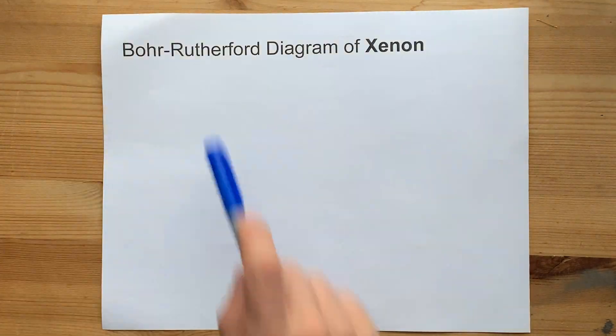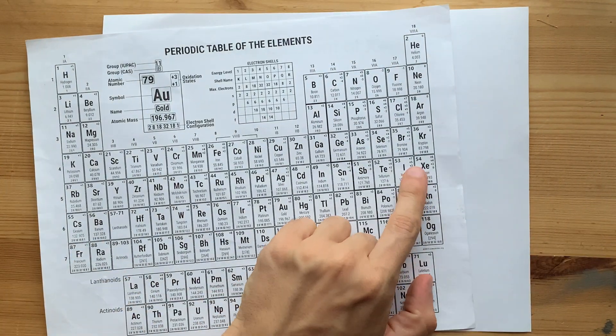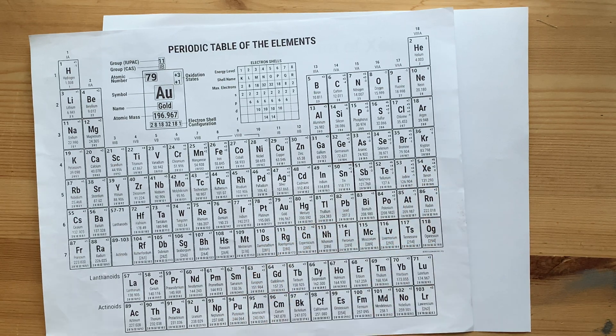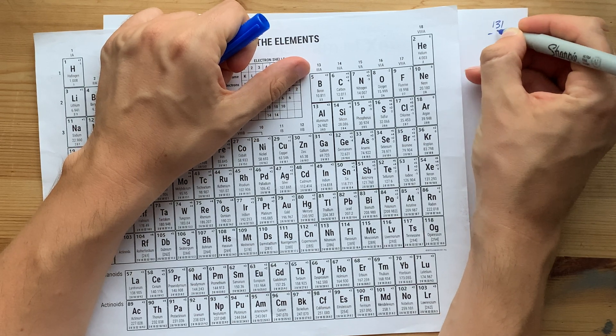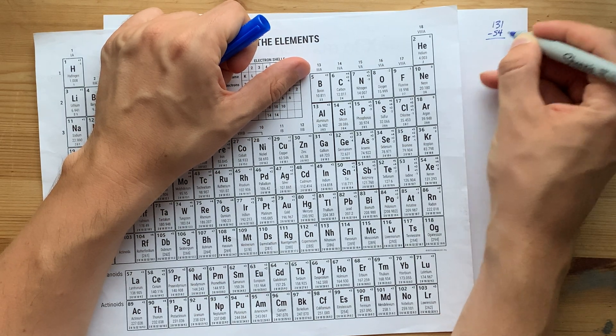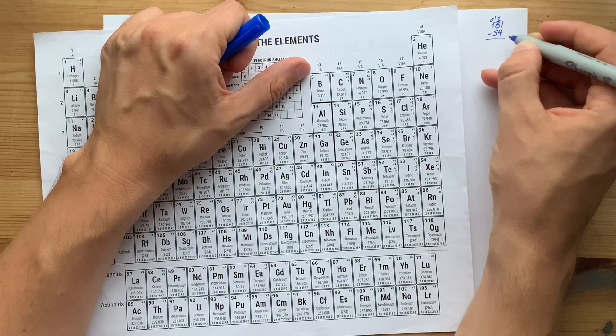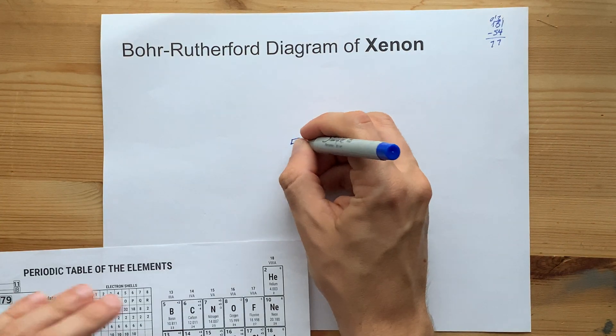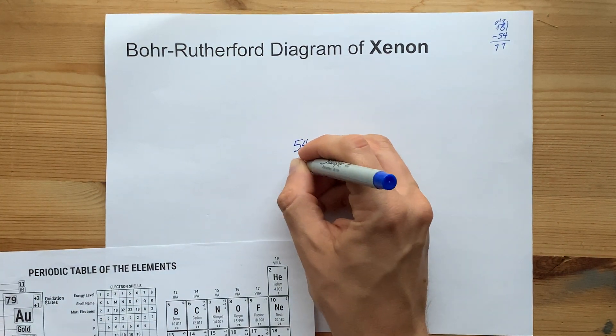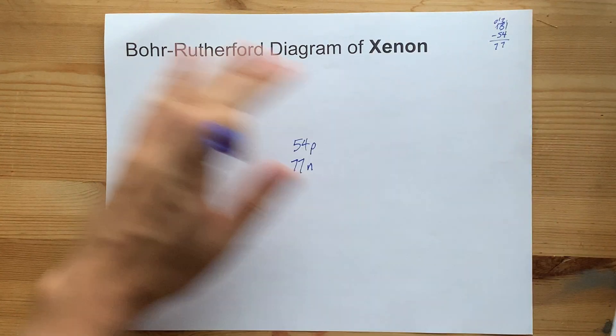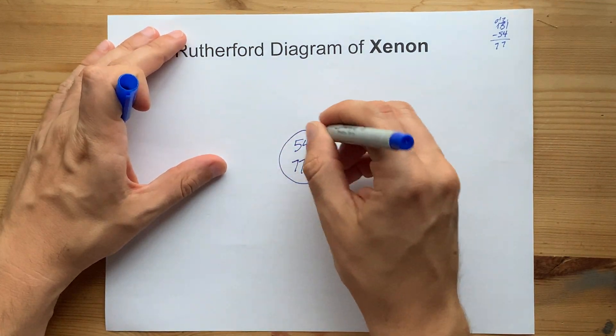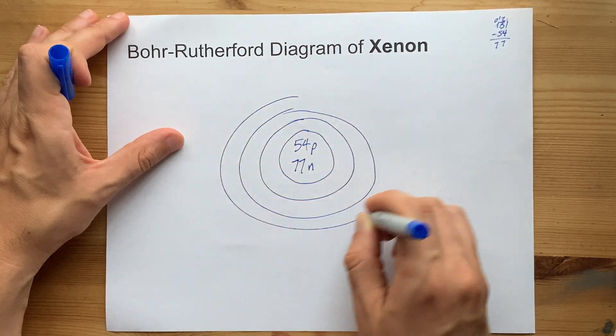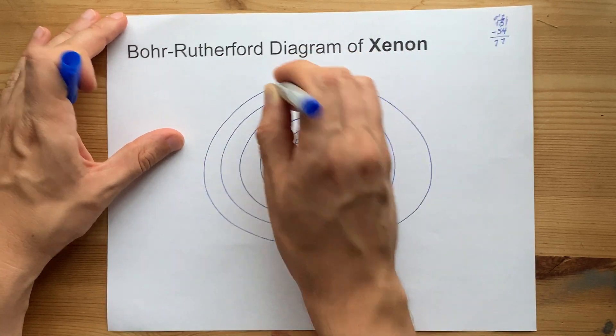The center of a Bohr-Rutherford diagram is always protons and neutrons. We've got 54 protons for xenon. It's 131 as a mass. 131 minus 54, what is this? It's like 77 neutrons. That's 54 protons, 77 neutrons. That's just the nucleus. Now I'm going to put my first, second, third, and fourth shell here.